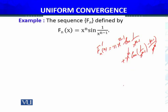So, x^n will cancel. So this will be my derivative: n x^(n-1) sin(1/x^(n-1)) minus (n-1) cos(1/x^(n-1)). This is the expression.